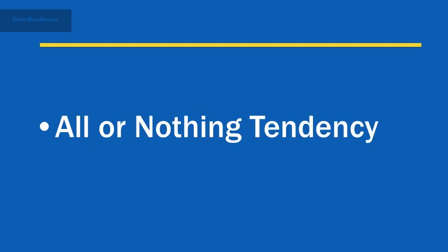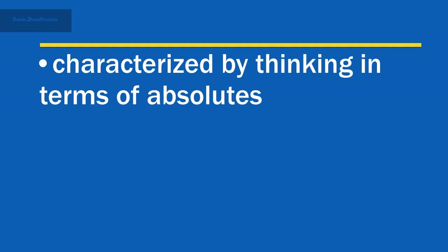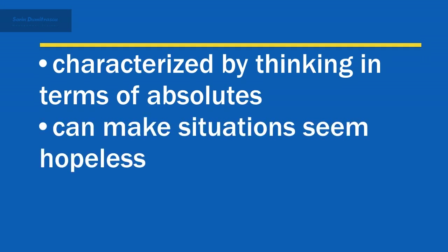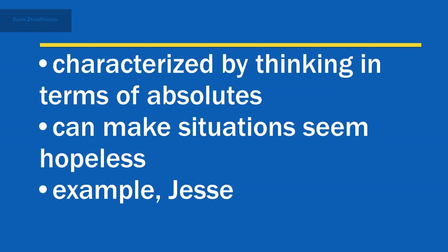All-or-nothing thinking is characterized by thinking in terms of absolutes such as always, never, every, or none. This way of thinking can make situations seem hopeless. For example, Jesse's boss told him and his team that their deadline had been moved up a week. Jesse's immediate reaction was that they'd never get the project done on time while fulfilling their other commitments — they'd have to drop everything and focus on this one task, but fail to deliver their other tasks on time.